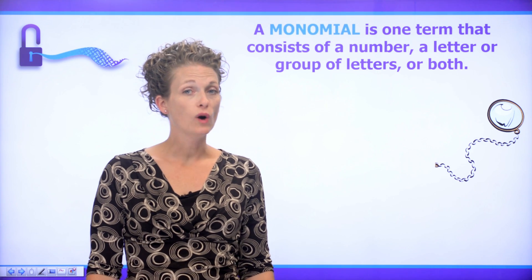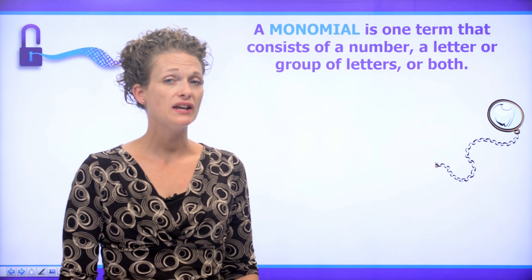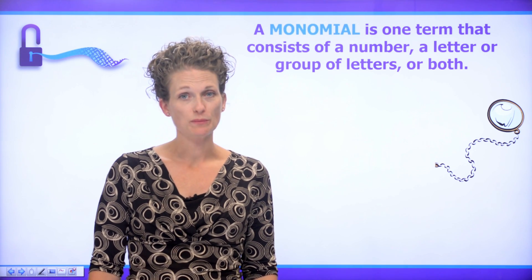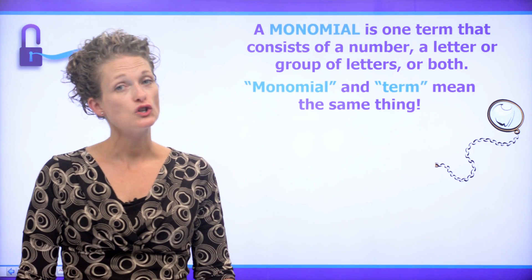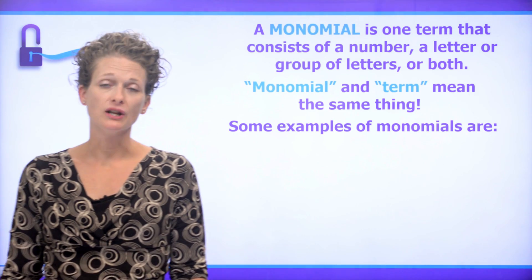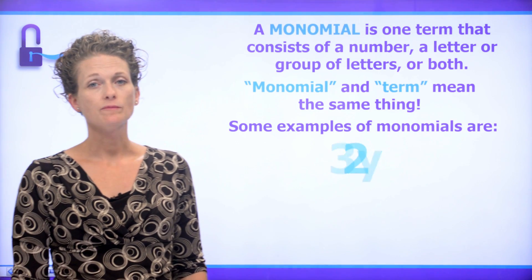So as we will see, a monomial is one term that consists of a number, a letter or group of letters, or both. Monomial and term mean the same thing. Now some examples of a monomial are 3y or 2.